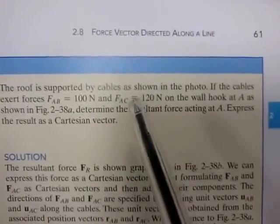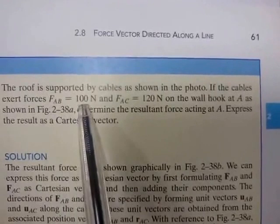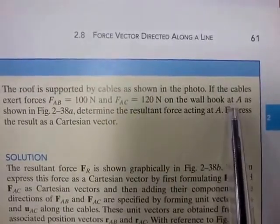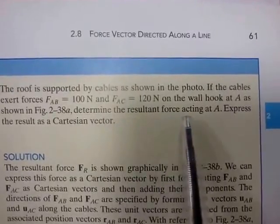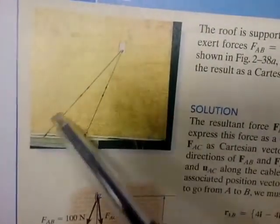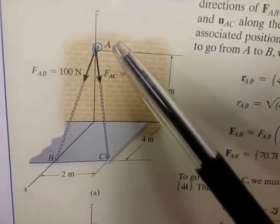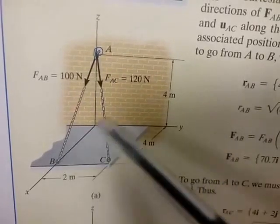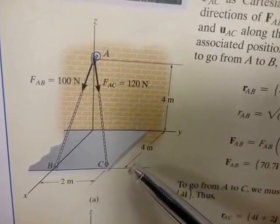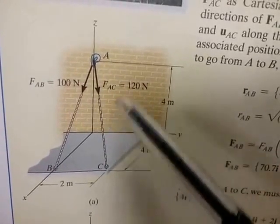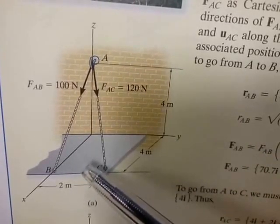The problem basically says: the roof is supported by cables as shown in the photo. If the cables exert forces FAB equals 100 N and FAC equals 120 N on the wall hook at A, determine the resultant force acting at A, and express the result as a Cartesian vector. So we've got this hook and two cables, each exerting a force. In this diagram there's the hook, the two cables attached to the floor at B and C, and we have a force of 100 N along one cable and 120 N along the other. The question is: what is the resultant force acting upon A?